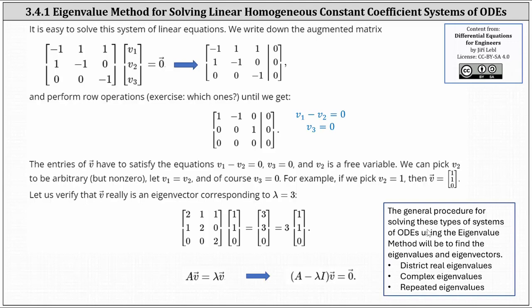The general procedure for solving these types of systems of ODEs using the eigenvalue method will be to find the eigenvalues and the corresponding eigenvectors. Remember, there are three possibilities when determining eigenvalues: distinct real eigenvalues, complex eigenvalues, and repeated eigenvalues. The type of eigenvalues will affect how we express the general solution. I hope you found this introduction helpful.